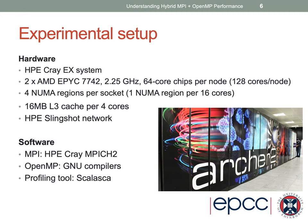For our case studies, the hardware is an HPE Cray EX system where each node contains two AMD EPYC 64-core chips, giving 128 cores per node. The memory system has four NUMA regions per socket — one NUMA region for every 16 cores — and 16 megabytes of L3 cache for every group of four cores. The system uses HPE's Slingshot network. The MPI library is Cray's MPICH2 variant, the OpenMP library and compiler are provided by the GNU compilers, and the profiling tool is Scalaska.